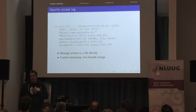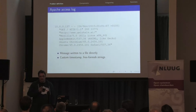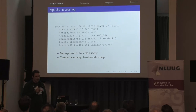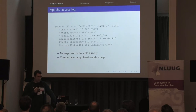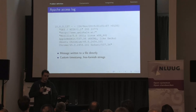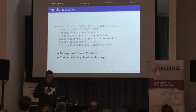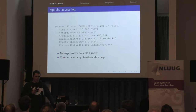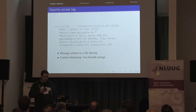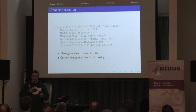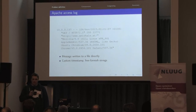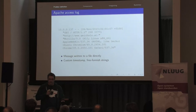Let's start with a typical Apache access log entry. This is a single-line log written directly to a file by Apache. It contains lots of information: the client IP address, a custom timestamp with a time zone, the exact request, the referrer, the response code, and some free-form text which happens to be the user agent information. If you want to parse this, you have to be careful — the user agent may be double-quoted but may also contain unescaped double quotes, which can make it difficult to extract.